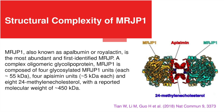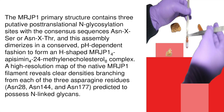MRJP1 is composed of four glycosylated MRJP1 units each around 55 kilodaltons, four apisimin units around 5 kilodaltons each, and 8-24-methylenecholesterol, with a reported molecular weight of around 450 kilodaltons. The MRJP1 primary structure contains three putative post-translational N-glycosylation sites with the consensus sequences asparagine followed by any amino acid residue followed by serine, or asparagine followed by any amino acid residue followed by threonine residue.